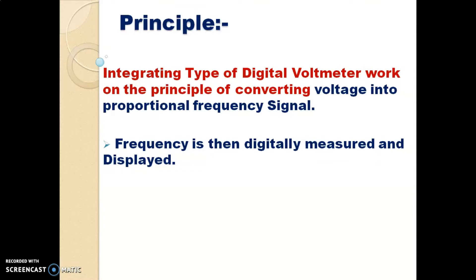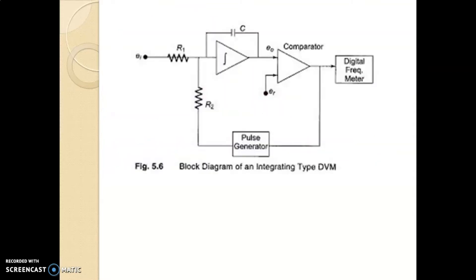That means, this integrating type of digital voltmeter converts input voltage into a frequency signal. By using this frequency, the frequency is then digitally measured and displayed. As shown in the figure, it is the block diagram of the integrating type of digital voltmeter.